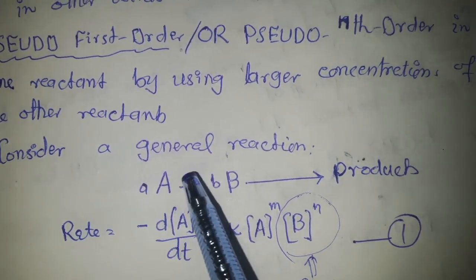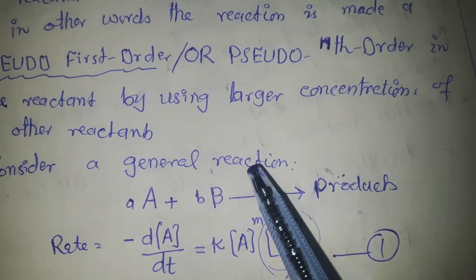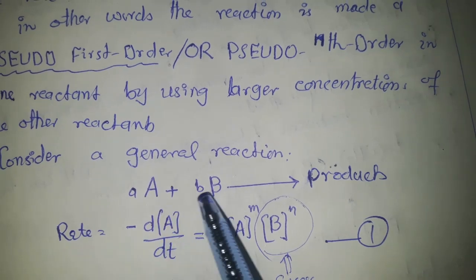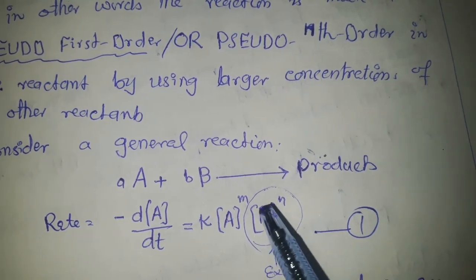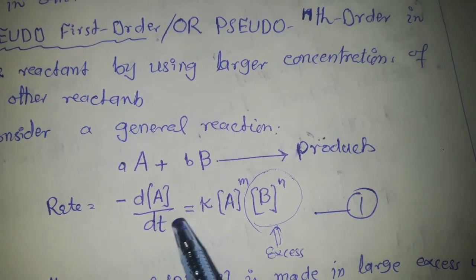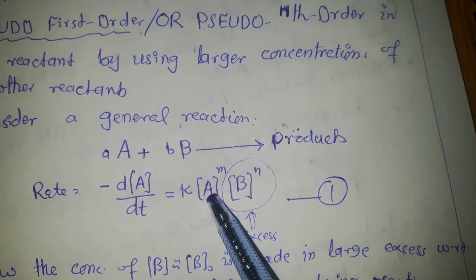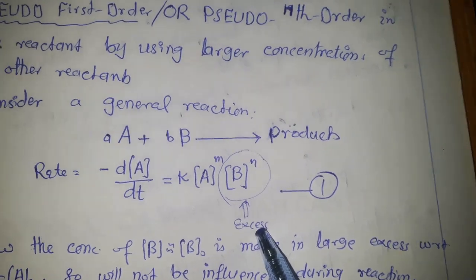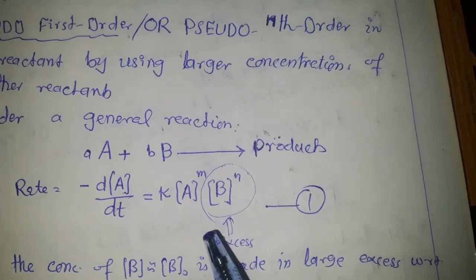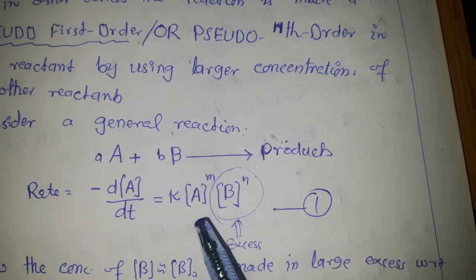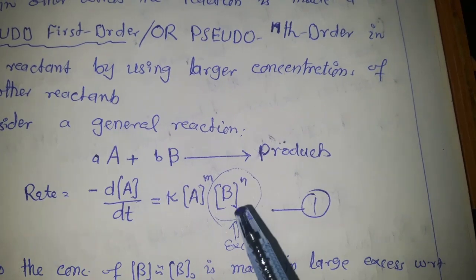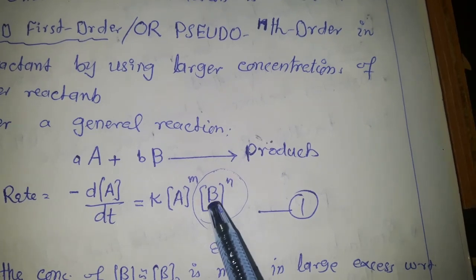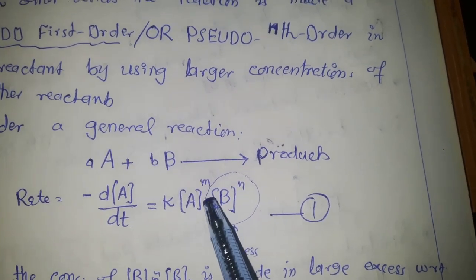Here we give a general example of a chemical reaction studied by this method. Reactant A combines with reactant B to give a product. The rate law expression is: rate = k[A]^m [B]^n. We take one reactant in large excess to determine the order with respect to the other reactant, and repeat for the next. In this case, we take reactant B in large excess and measure the order with respect to reactant A.